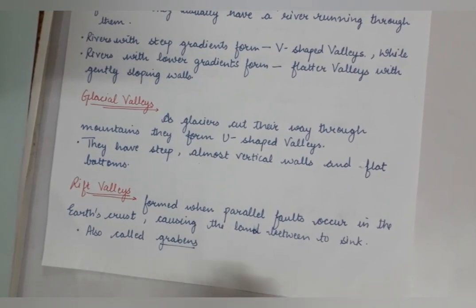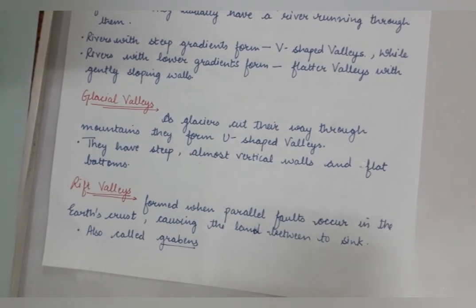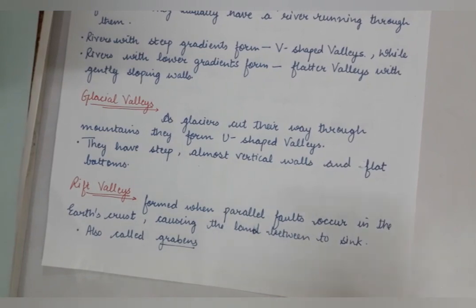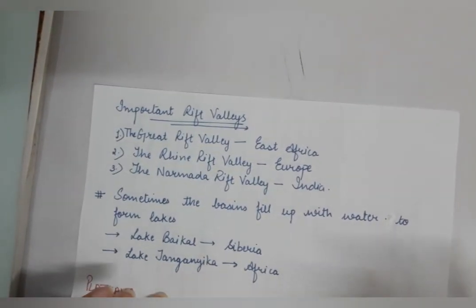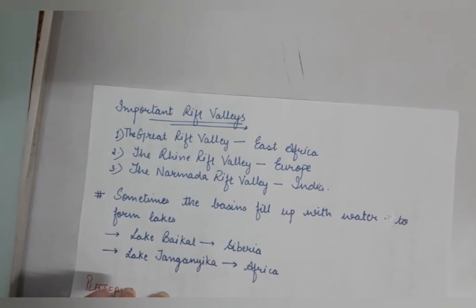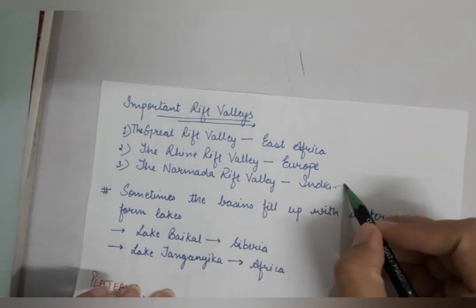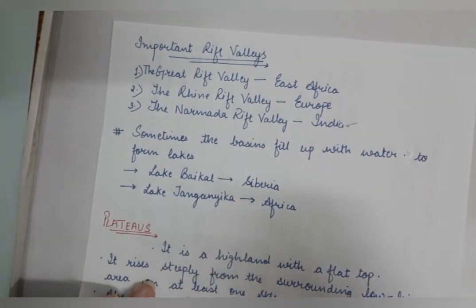The rift valley, as discussed, is also known as grabens. They are formed when there are parallel cracks in the earth's crust, due to which the sides move apart and a depth is created which is filled by deposited silt or mud. Important examples are the Great Rift Valley in East Africa, the Rhine Rift Valley in Europe, and the Narmada Rift Valley in India.